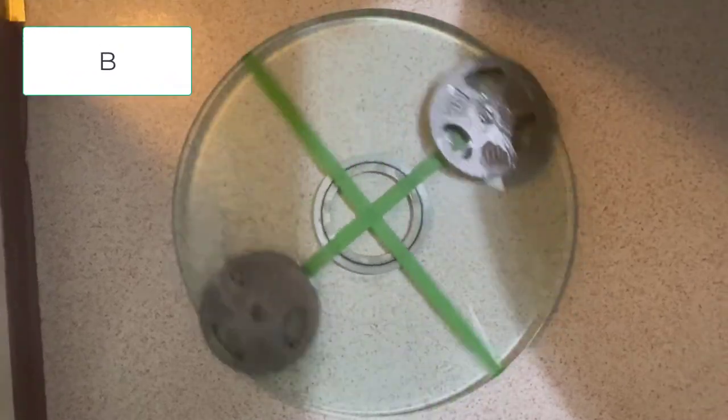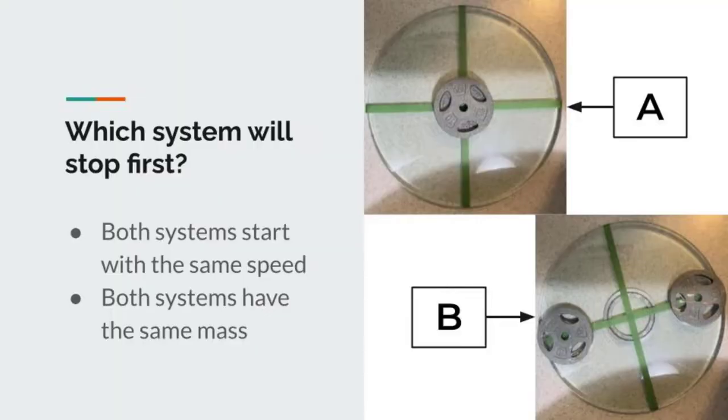Now make a prediction. Which system will stop first? We're assuming that both systems start with the same speed and both systems have the same total mass. The only difference is how the masses are distributed. Pause the video now and make a prediction.